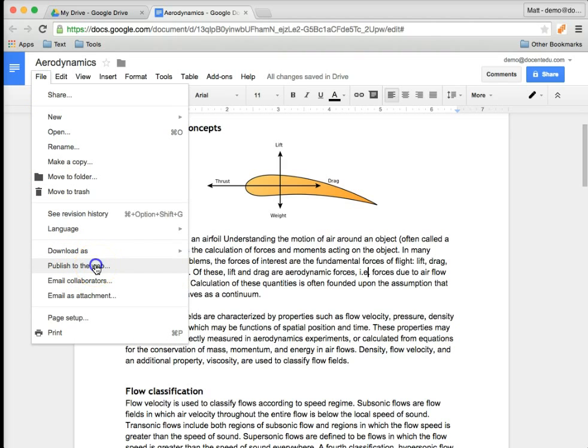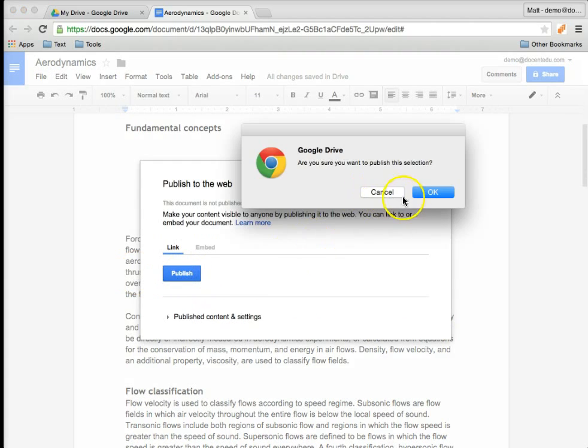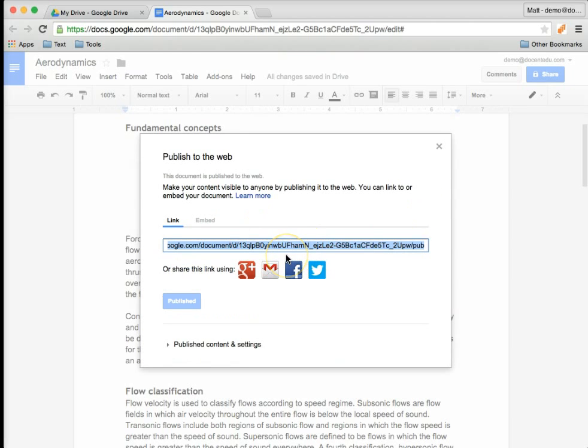So the first thing is, once you have your doc created, go ahead and publish it. Just click yes, and you want to copy that link. We're just going to open it up in a new tab.